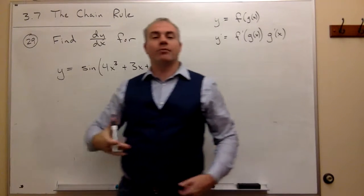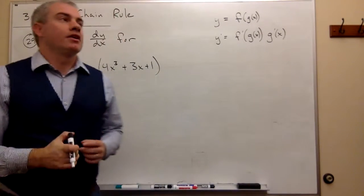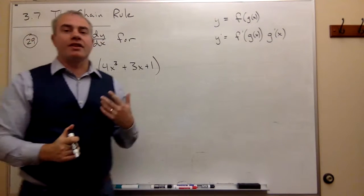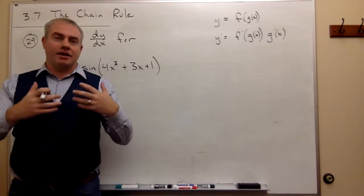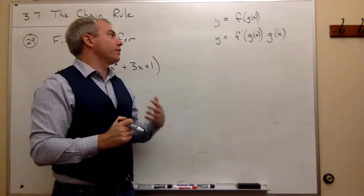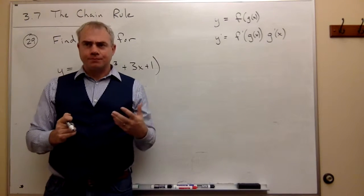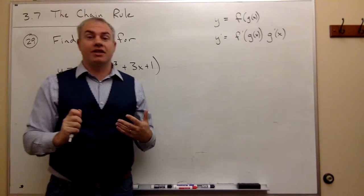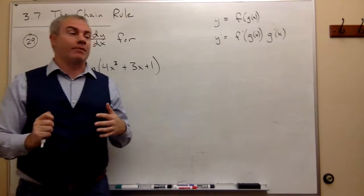Now this is the actual formula, but in practice it's much easier to think of this in other terms. The way that I like to think about it is you got to think about what's the most outside thing that's happening to this function. In other words, what's the very last thing that I would do to this thing if I were plugging it into my calculator?